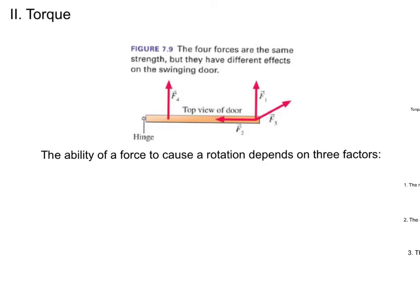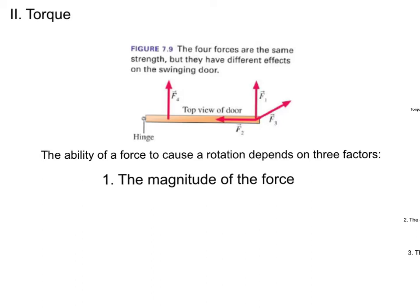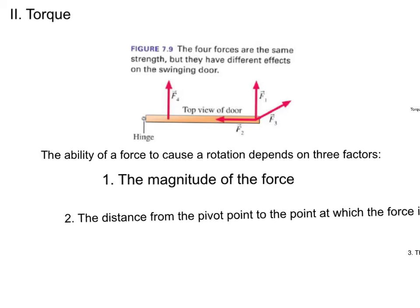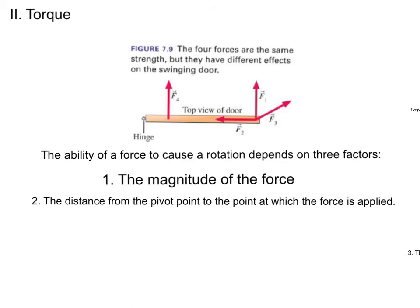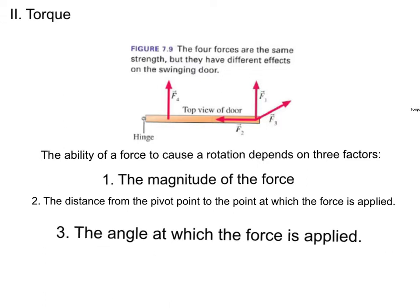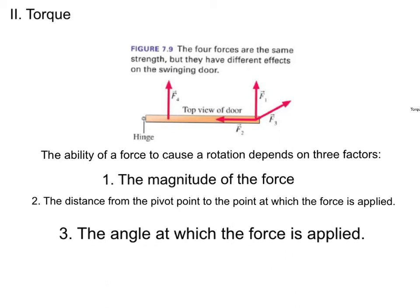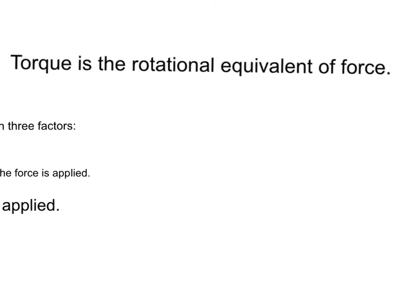The ability of a force to cause a rotation depends on three factors: first, the magnitude of the force; second, the distance from the pivot point to where that force is applied; and third, the angle at which that force is applied. We incorporate these three observations into a single quantity called torque. Torque is the rotational equivalent of force — it measures the effectiveness of a force in causing an object to rotate about a pivot point. We abbreviate torque with the Greek letter tau.